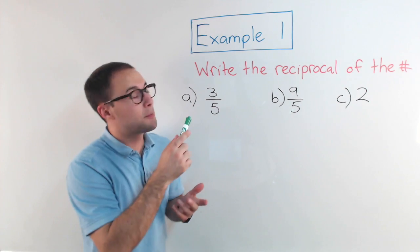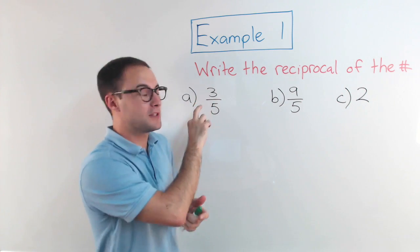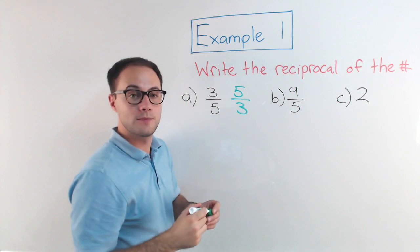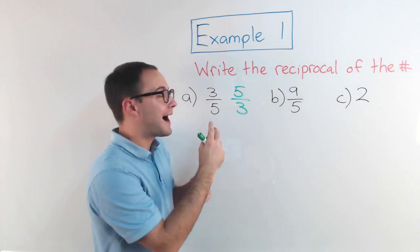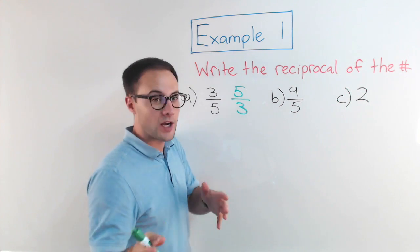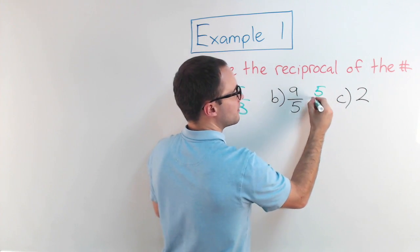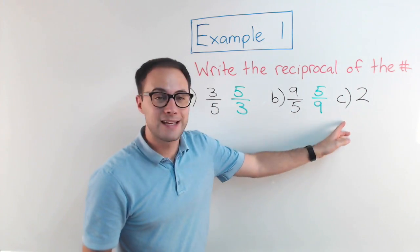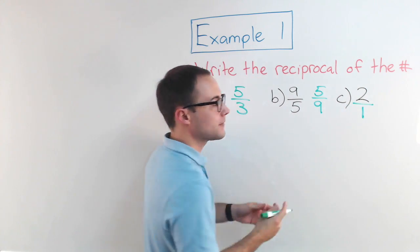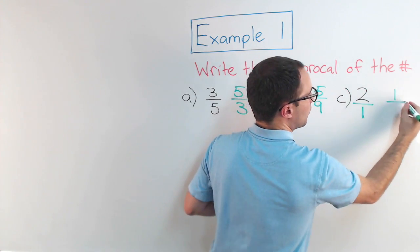Example number one: write the reciprocal of the number. What is the reciprocal of three-fifths? All you have to do — if it's written as a fraction, you just flip it. So the reciprocal of three-fifths is five-thirds. If we multiply those together, our product would be one, which means they are reciprocals. You can pause the video and try the others on your own. The reciprocal of nine-fifths — just flip it — that would be five over nine. For letter C, the reciprocal of two: write it as a fraction first, two over one, then flip it — the reciprocal is one-half.